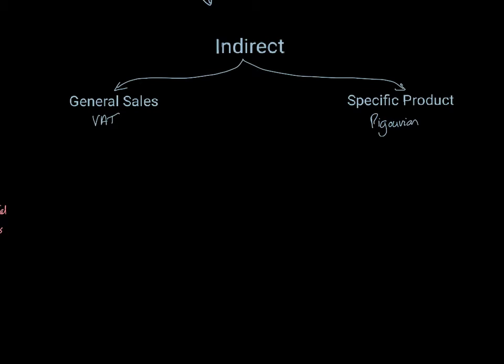The alternative is specific products. Now, you can sometimes call these Pigouvian taxes. These are taxes which are generally imposed to try and discourage people from consuming this particular good. So these are normally on products where there is a degree of negative externality effect going on. So things like alcohol consumption, smoking, increasingly things like high sugar, high fat foods, those sorts of things. Those are taxes on specific products.